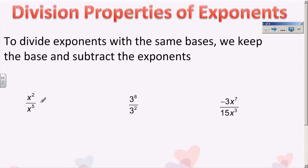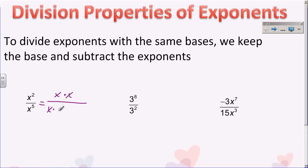I'm going to show you with this first example why we have to move things that have negative exponents. This division example is going to make perfect sense. If I write this in expanded form, x squared is x times x, and then on the bottom, x to the fifth — I have five of them. Based on what you know about simplifying and reducing, these x's will cancel each other, leaving me with three x's in the bottom, but I don't have anything on top except a one, because when these cancel each other, they made a one.